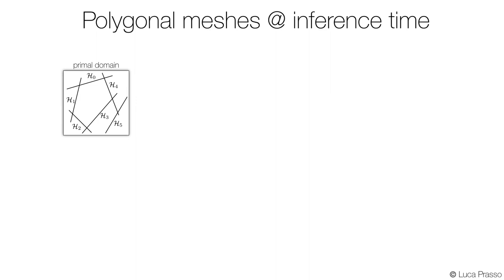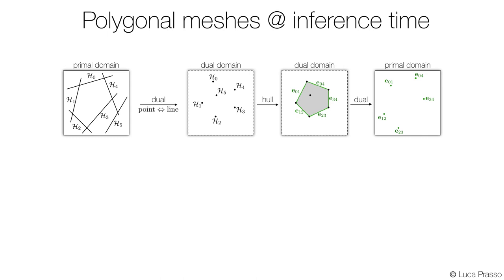At inference time, given the predicted half-spaces, we first convert them to points via a duality transform. We then compute the convex hull of these points, take the dual of the boundary edges resulting in points in the primal domain whose convex hull is the desired polygonal mesh.